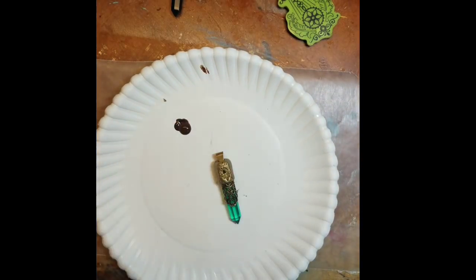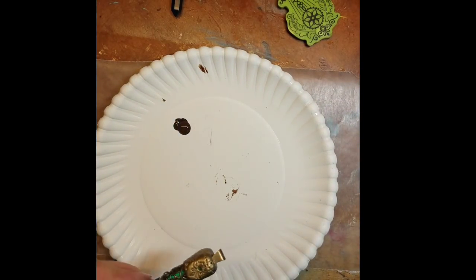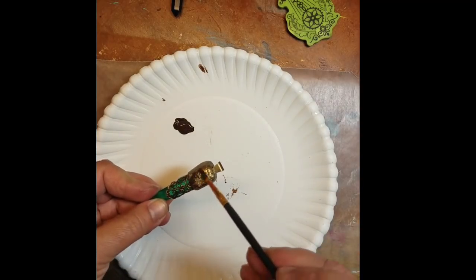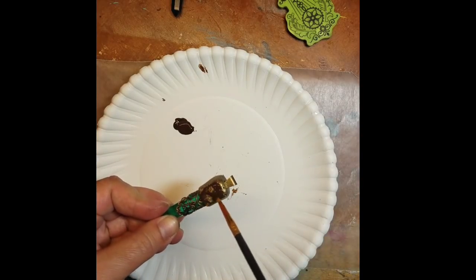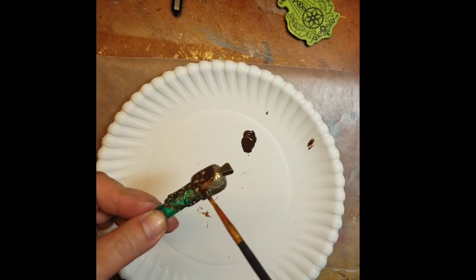Next add some burnt umber to the epoxy sculpt. I wanted to get into all the little grooves and texture that I created. Then wipe it away with a paper towel.